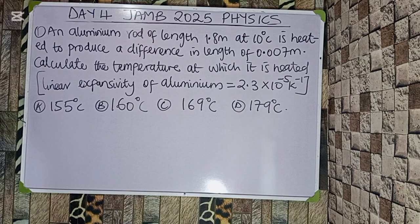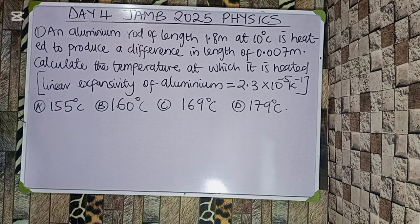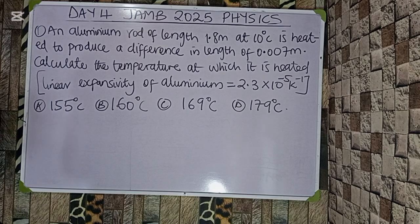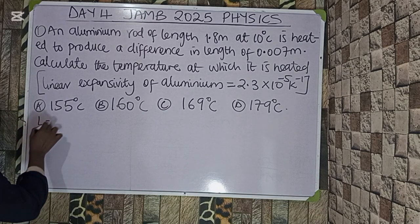Question one: an aluminium rod of length 1.8 meters at 10 degrees Celsius is heated to produce a difference in length of 0.007 meters. Calculate the temperature at which it is heated. We are given the linear expansivity of aluminium to be 2.3 × 10⁻⁵ per Kelvin. We have the following options. From this question, what you're looking for is the second temperature.